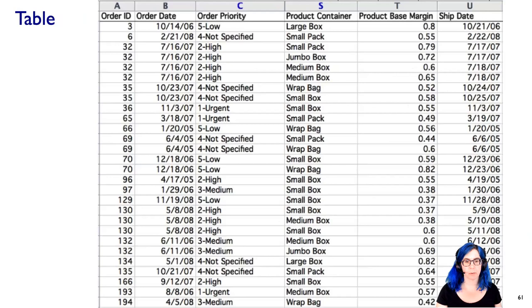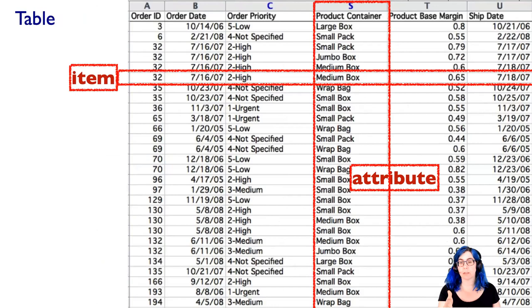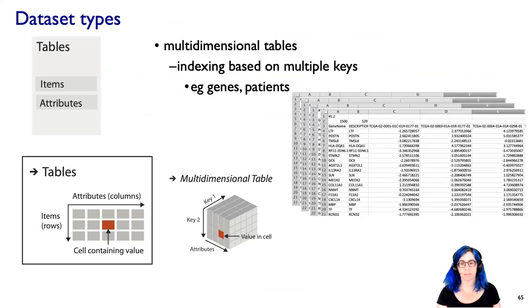Let's look at an example from some real world data here, thanks to Mariah Meyer. So this data, we've got item, right? Notice how in fact our order ID doesn't even give us, that's not a, there could be multiple items per order. So none of these is unique. But we've got an item going across, we've got an attribute, in this case, product container. And the intersection for this item of this attribute, in this case, a cell in that table, is medium box.